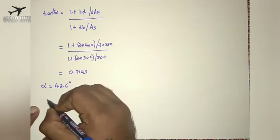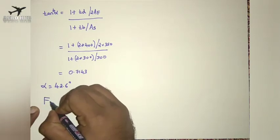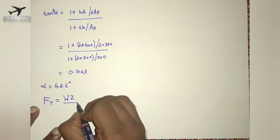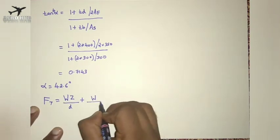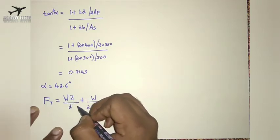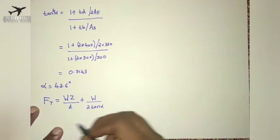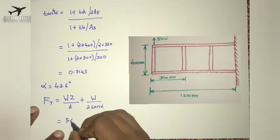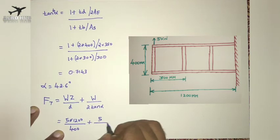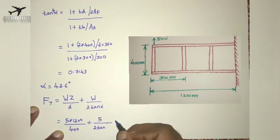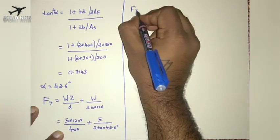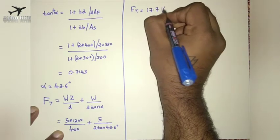Now the next part is to find out the force acting on the top flange. The formula is: F = W·Z / D + W/2 · tan(alpha), where W = 5 kN, Z = 1200 mm, D = 400 mm, and alpha = 42.6 degrees. Substituting: W·Z = 5 × 1200, D = 400, plus 5/2 × tan(42.6°). I get the force acting on the top flange as 17.7 kN.